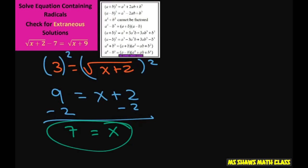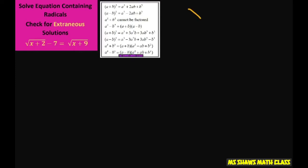Now we just have to check by plugging in our original equation to see if it's true. Do we have a real solution or is it extraneous? So we have x equals 7. Now let's plug it in. So square root of 7 plus 2 minus 7, does that equal square root of 7 plus 9?